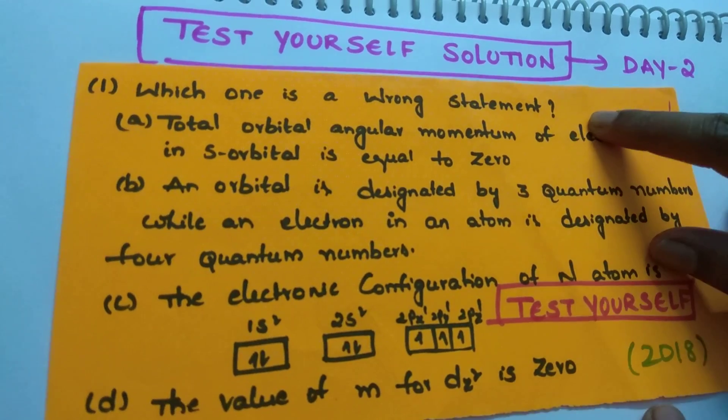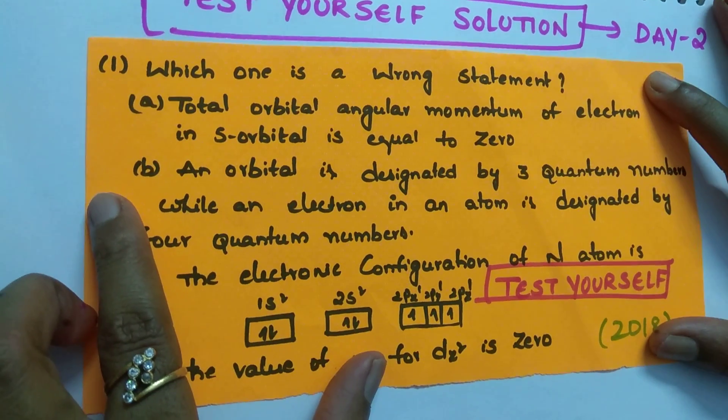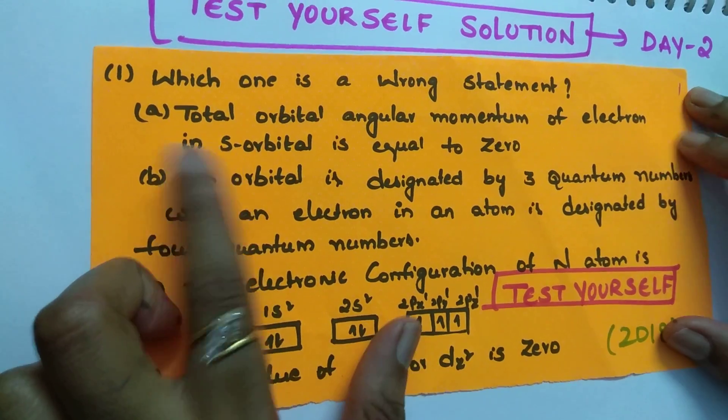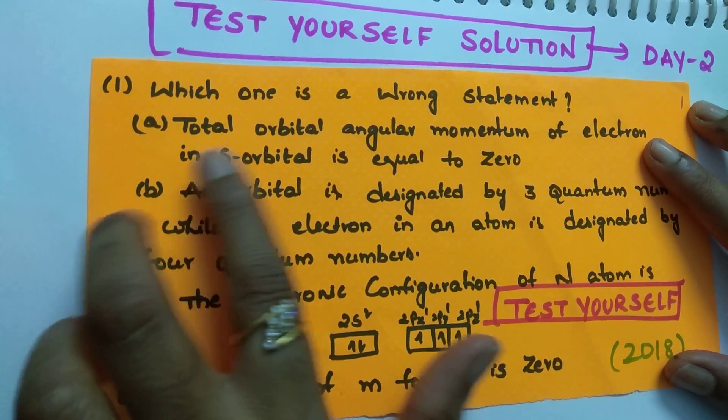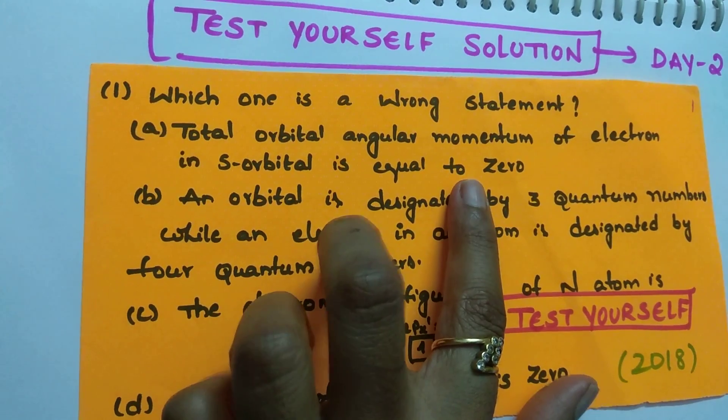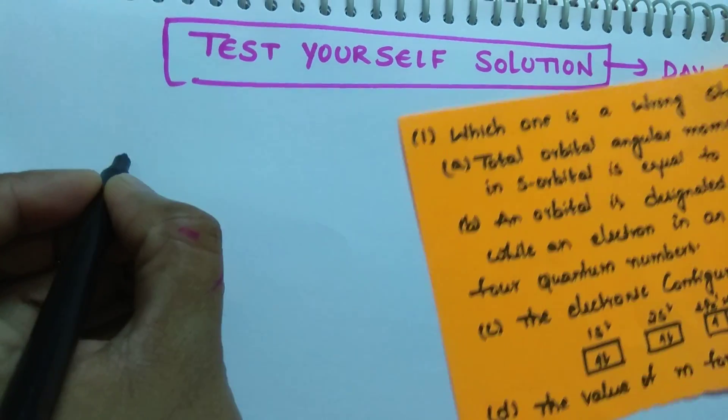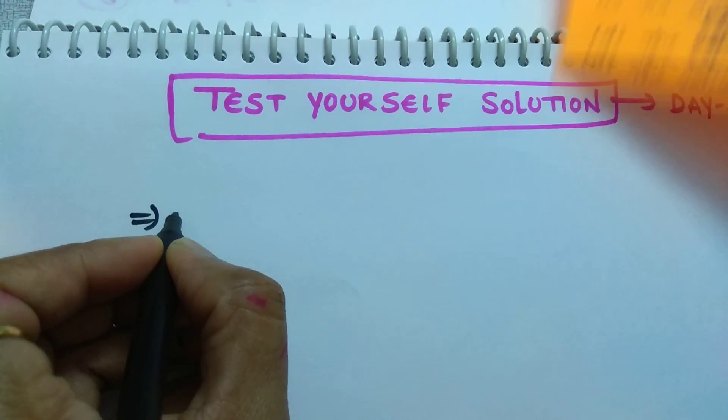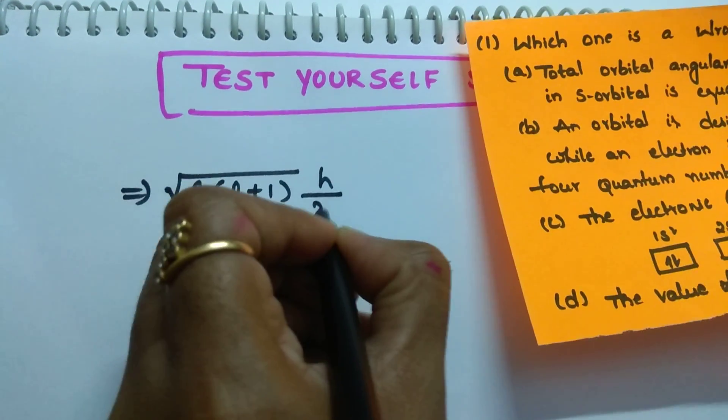Which one is a wrong statement? See here, first one is you have to identify the wrong statement. First one is total orbital angular momentum of electron in s orbital is equal to 0. So, what is the formula to calculate the orbital angular momentum I already discussed in the last session: square root of L into L plus 1 H by 2 pi.